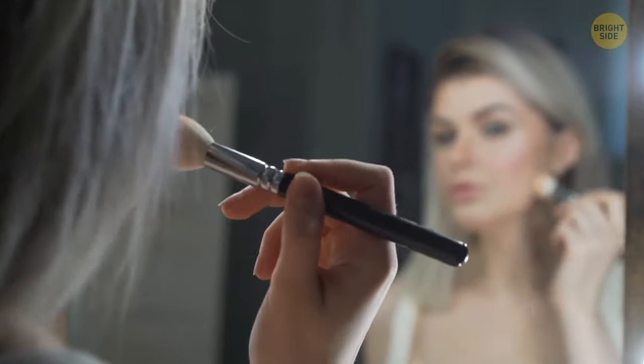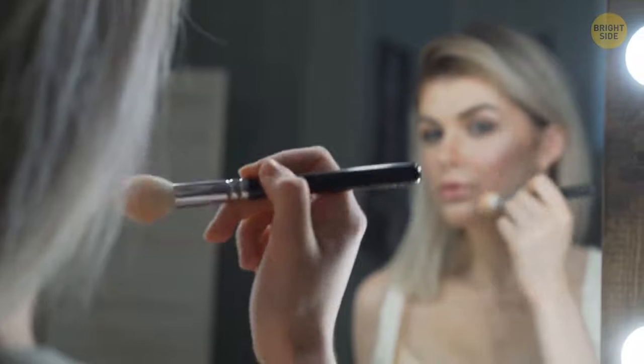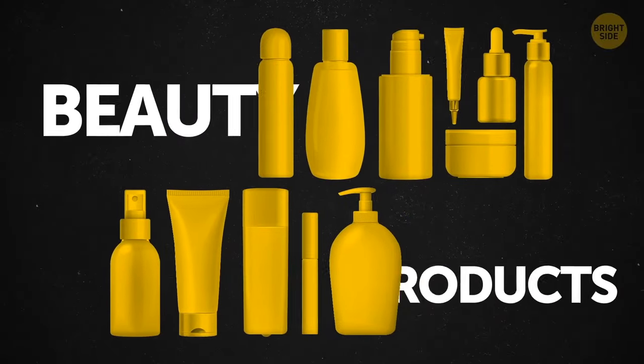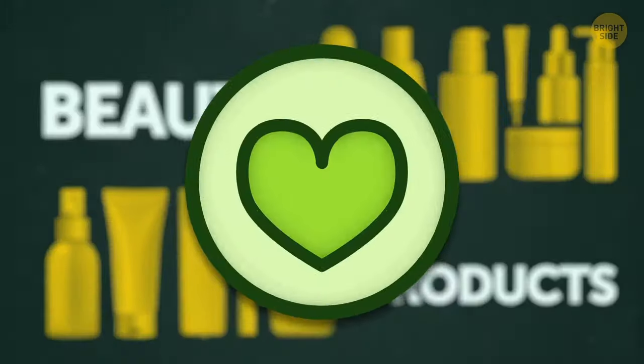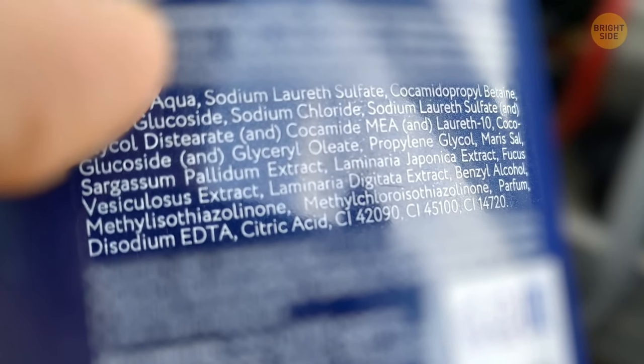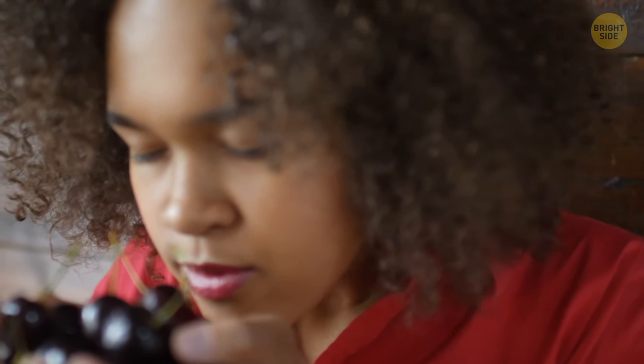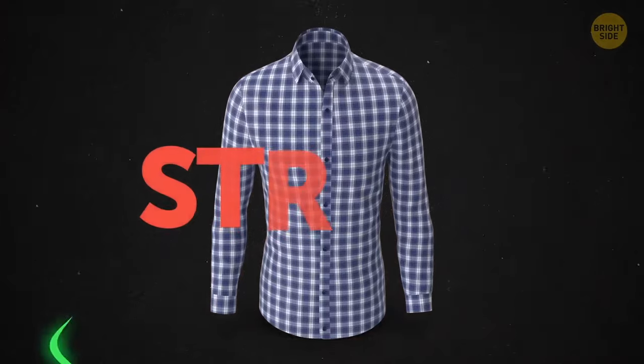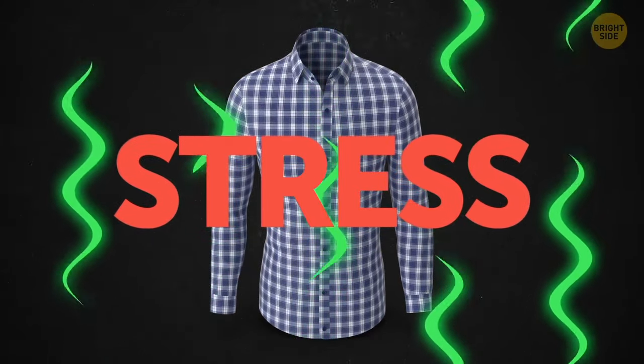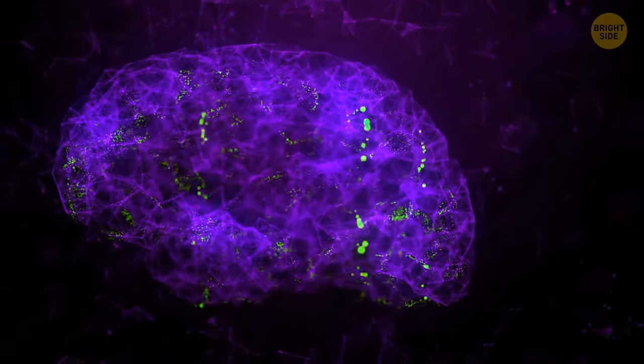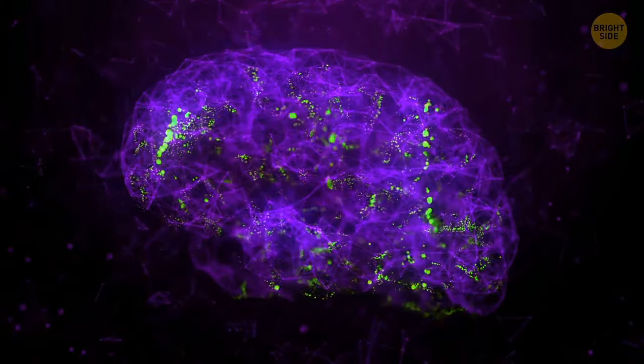Every day, the average woman unknowingly puts on about 515 chemicals on her body. They come in deodorants, shampoos, conditioners, moisturizers, and other beauty products. Most of them are harmless, but it's always better to research the products to avoid toxins. Women are so good at detecting scents, they can even tell when their partner is stressed out just by smelling their shirt. This could be because females have more cells and neurons in the part of the brain responsible for identifying smells.